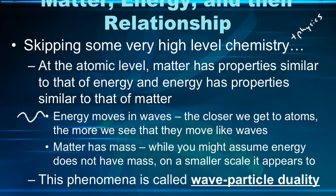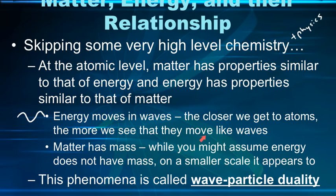Before we start talking about electrons, we need to talk about matter, energy, and the relationship between the two of them. At the atomic level, matter has properties similar to that of energy, and energy has properties similar to that of matter. Energy moves in waves — an oscillating wave. The closer we get to atoms, the more we see that they have wave-like behavior, so they have some of these properties of energy. Matter also has mass; energy does not — though on a smaller scale, it appears to. So there's a crossover between matter, which takes up space and has mass, and energy, which doesn't really have mass and moves in a wave-like pattern.